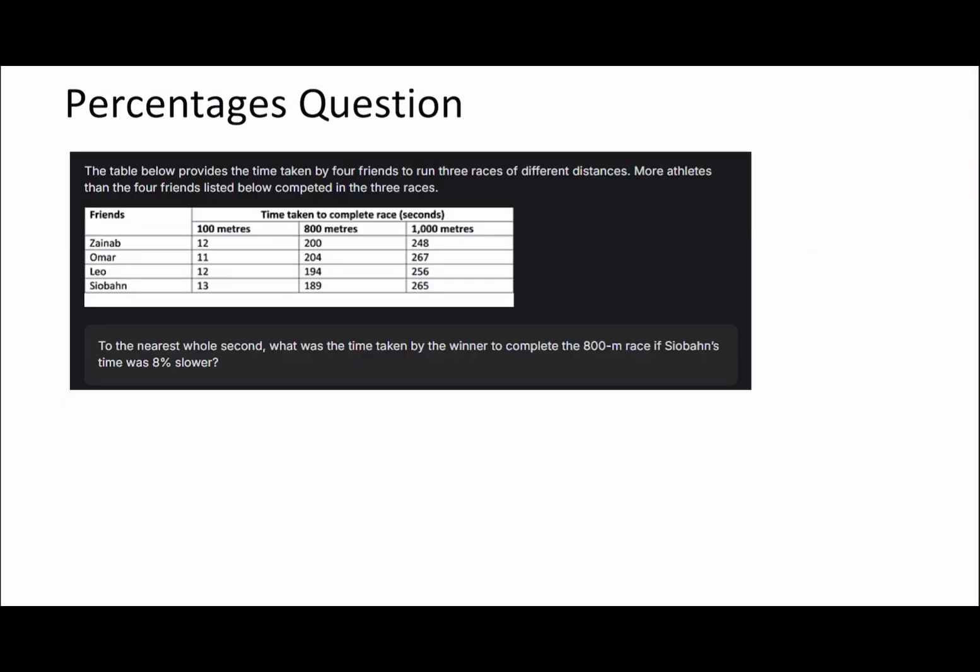To the nearest whole second, what was the time taken by the winner to complete the 800-meter race if Siobhan's time was 8% slower? So if Siobhan's time was 8% slower than the winner, 189 equals 1.08 times x.